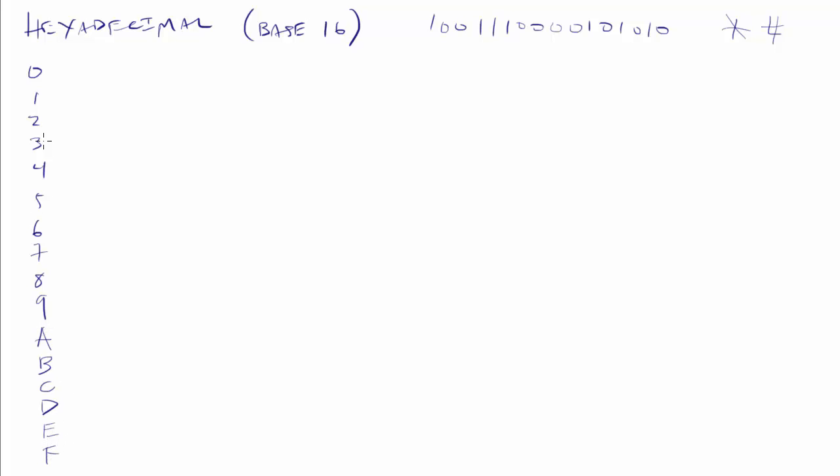And now we have 16 numbers. 1 2 3 4 5 6 7 8 9 10 11 12 13 14 15 16. We've got 16 numbers now. Whenever I see an a, that represents a 10. Whenever I see a b, that represents an 11. A c is a 12. A d is a 13. An e is a 14. And an f is a 15.